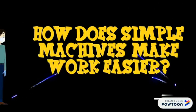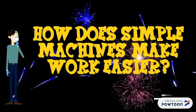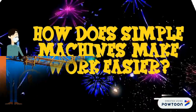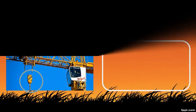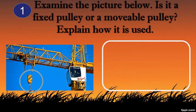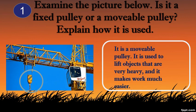How do simple machines make work easier? Let's find out. Is it a fixed pulley or a movable pulley? Explain how it is used. It is a movable pulley. It is used to lift objects that are very heavy, and it makes work much easier. You are correct, very good.